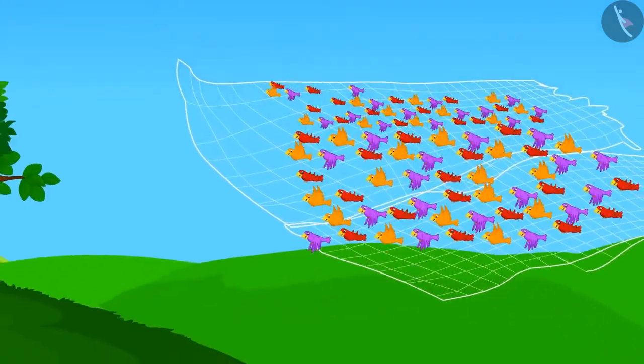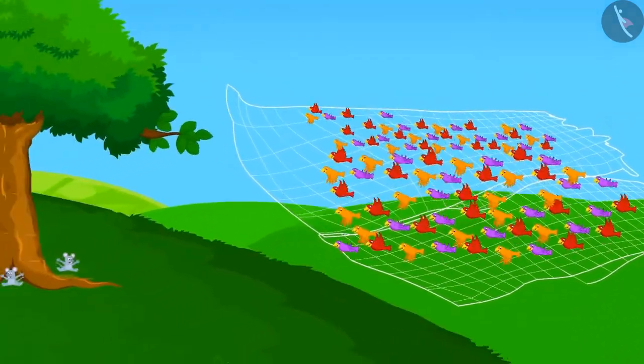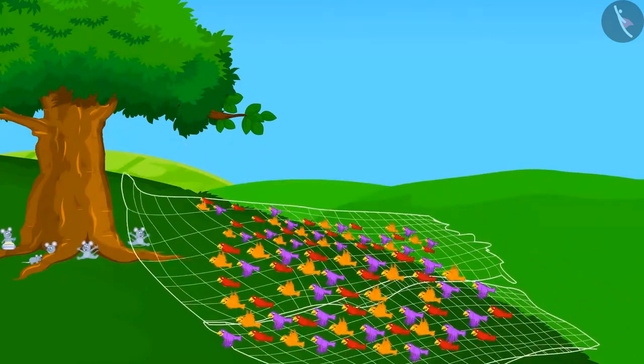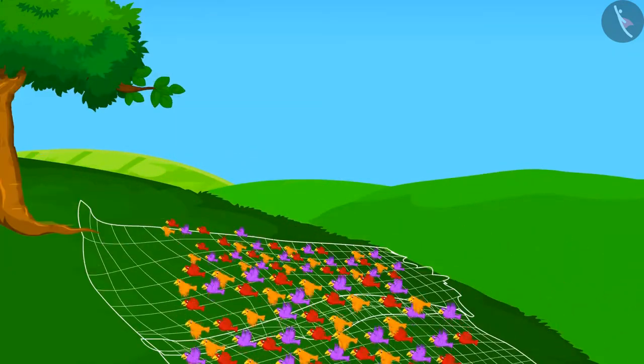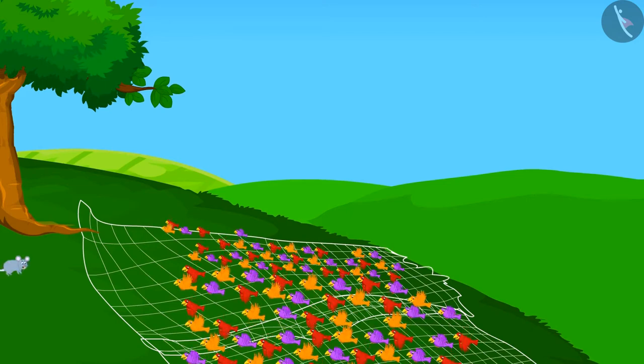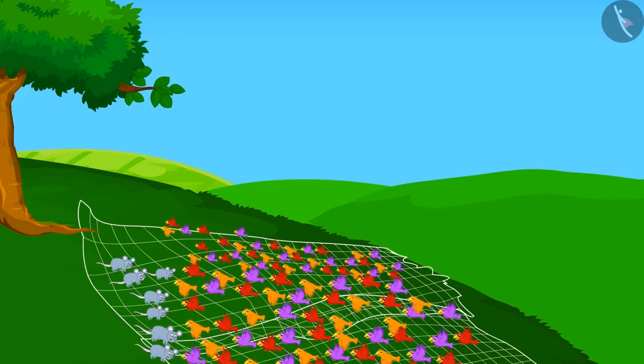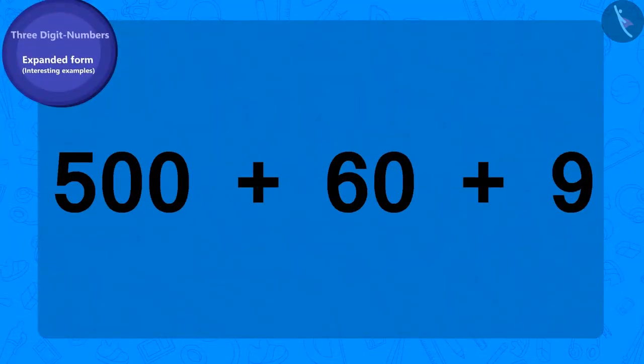Just then they got another idea. Their rat friends lived at a distance from the forest. They flew to the rats colony. Seeing the birds stuck in the net, the rats came running and started cutting the nets.